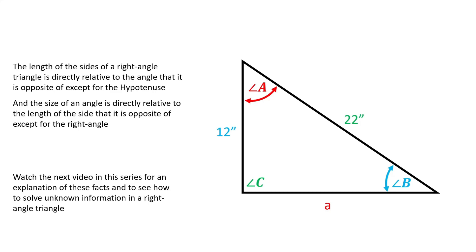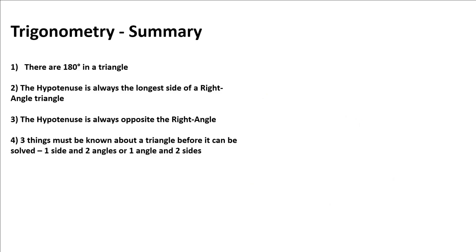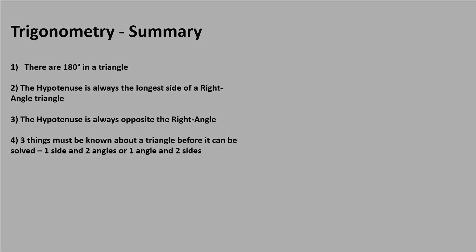Let's summarize. There are only 180 degrees in a triangle. The hypotenuse is always the longest side of a right angle triangle. The hypotenuse is always opposite the right angle. And before we can solve a triangle, three things must already be known about that triangle: one side and two angles, or one angle and two sides.